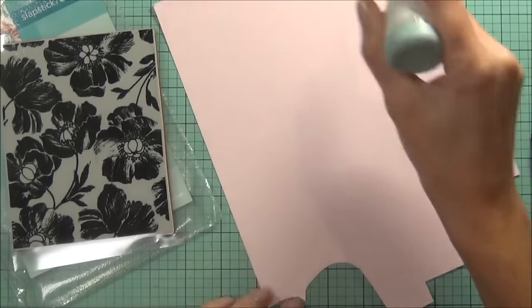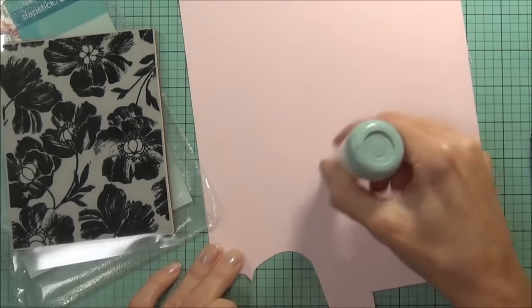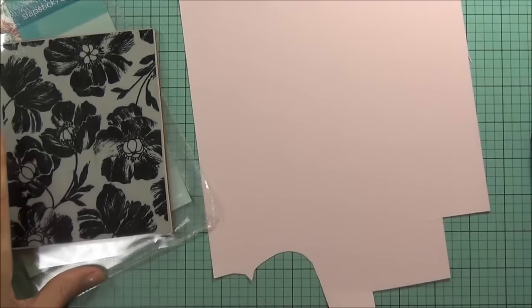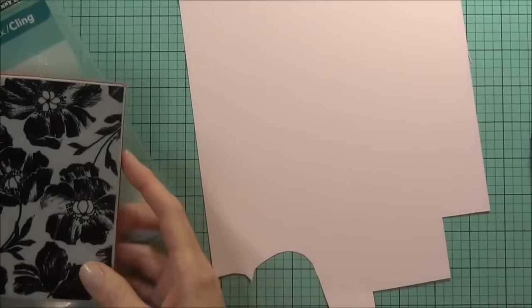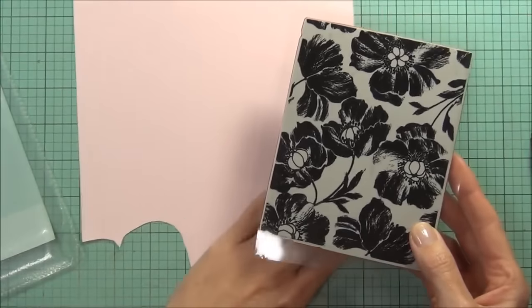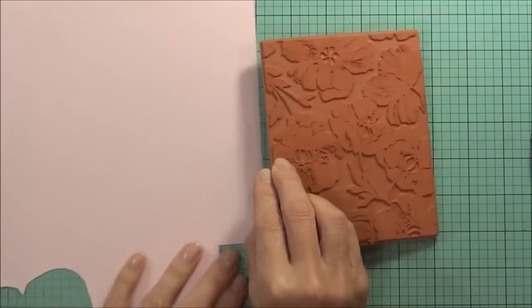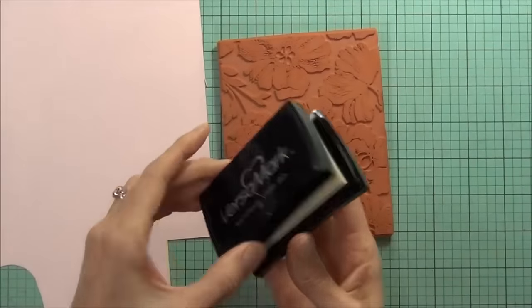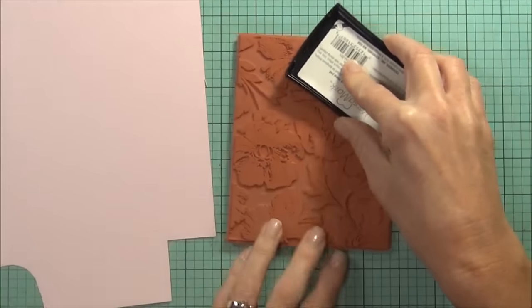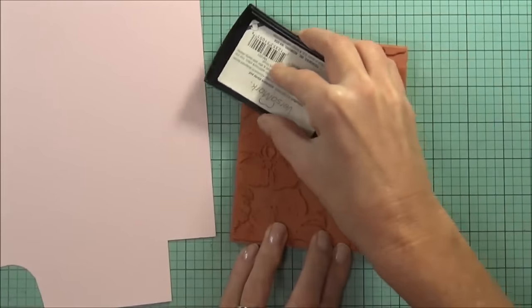Hi, it's Therese from Lost in Paper and I'm back for Penny Black. Today I'm going to be making a double embossed gold card using this really pretty floral background stamp, a slapstick called Poppy Pattern. I want to start working on my first layer of gold using my Versamark ink.